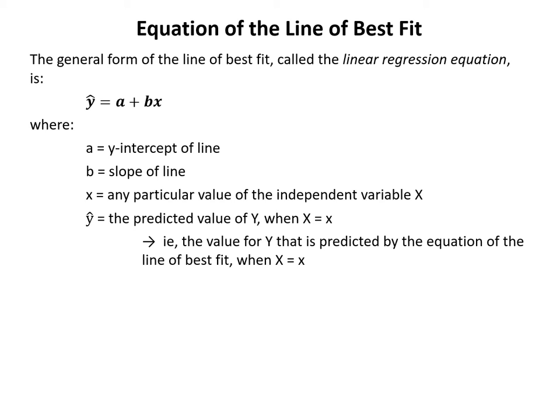The general form of the line of best fit is called the linear regression equation: y-hat equals a plus bx, where a equals the y-intercept and b equals the slope. Here, small x equals any particular value of the independent variable X, and y-hat (a small y with a hat symbol) equals the predicted value of Y when X equals that particular x — in other words, the value predicted by the line of best fit.